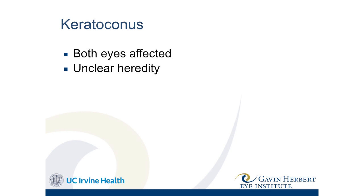Both eyes are affected, though one may be much more affected than the other. Before we had the ability to scan the cornea, we thought it might be a one-sided disease, but even when keratoconus appears on one side, scanning shows the other eye is affected to some degree. The hereditary pattern is unclear — some studies on identical twins show one has keratoconus and one doesn't. It's estimated that on average 10% or less of a patient's children may develop this condition.